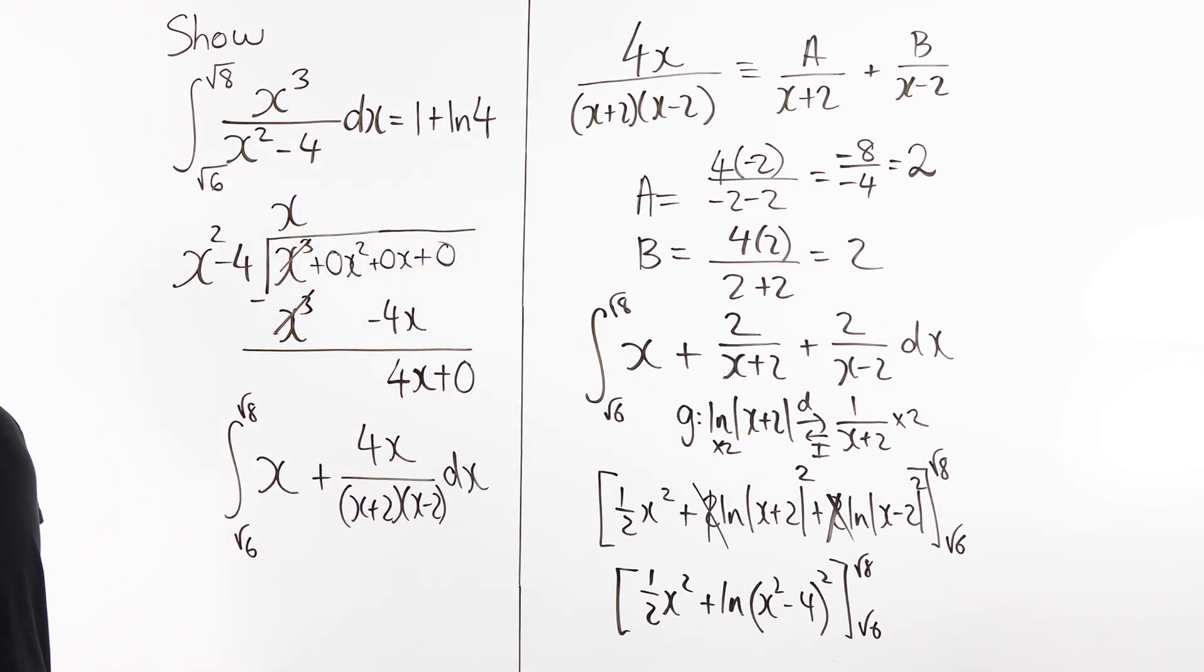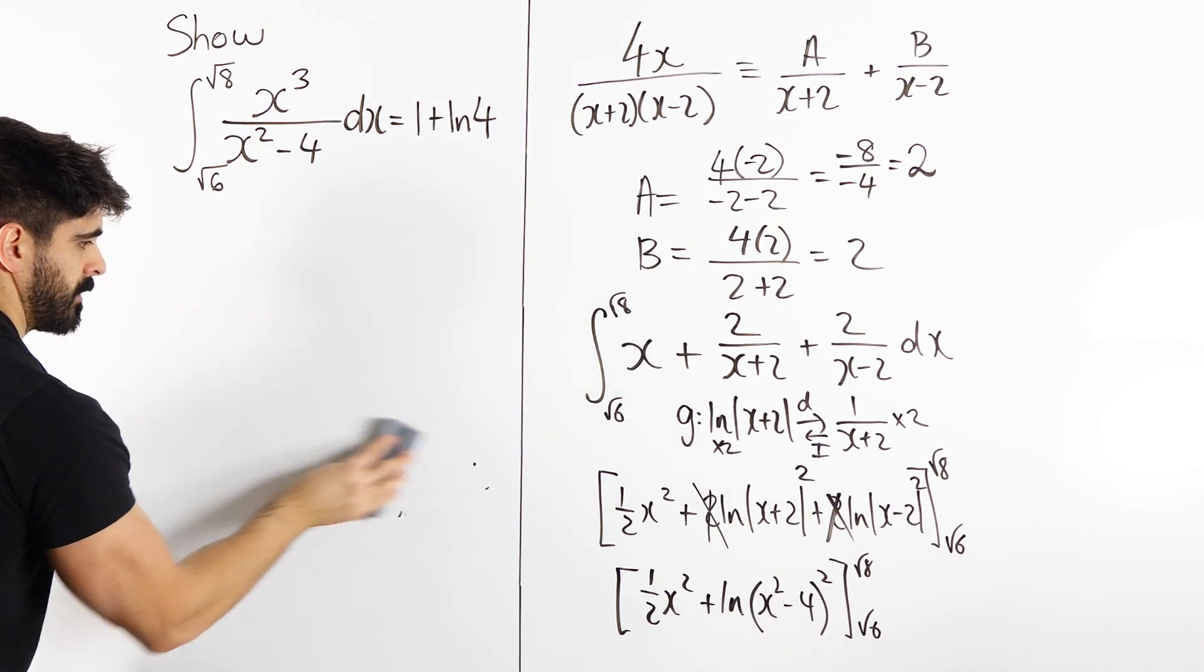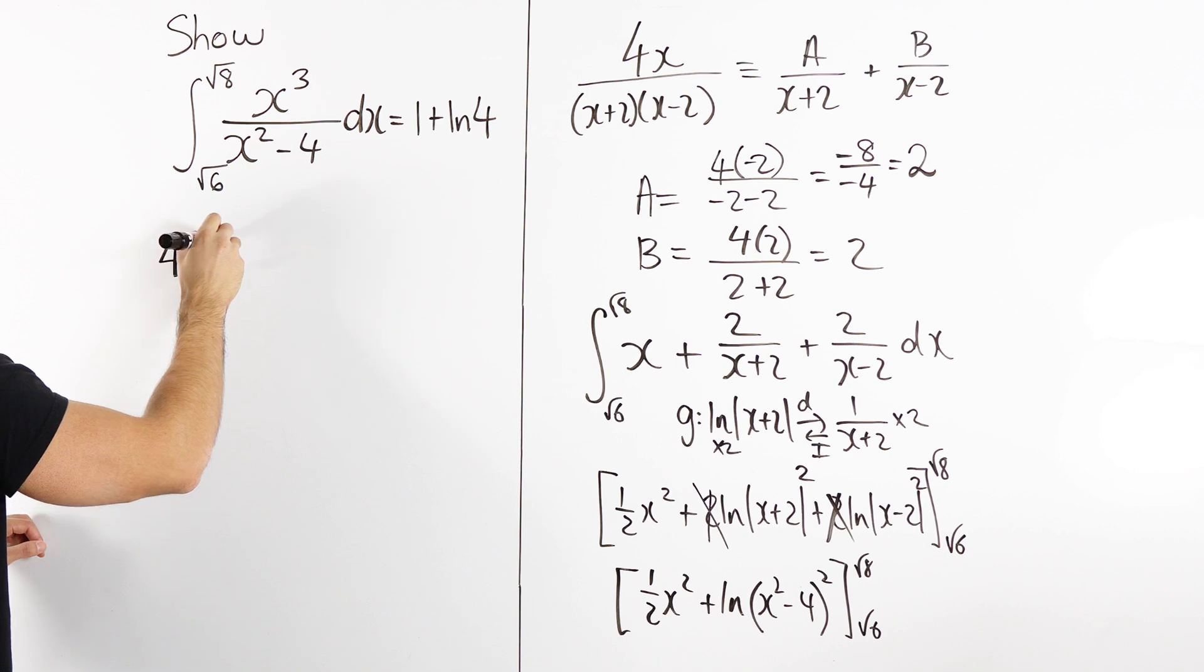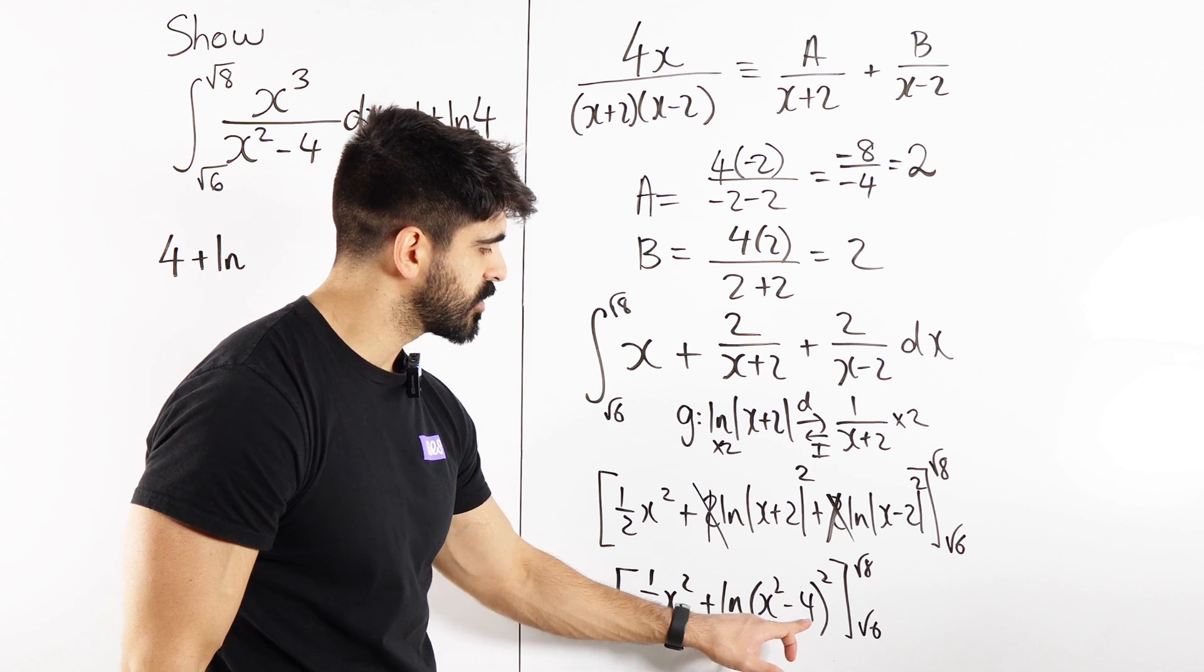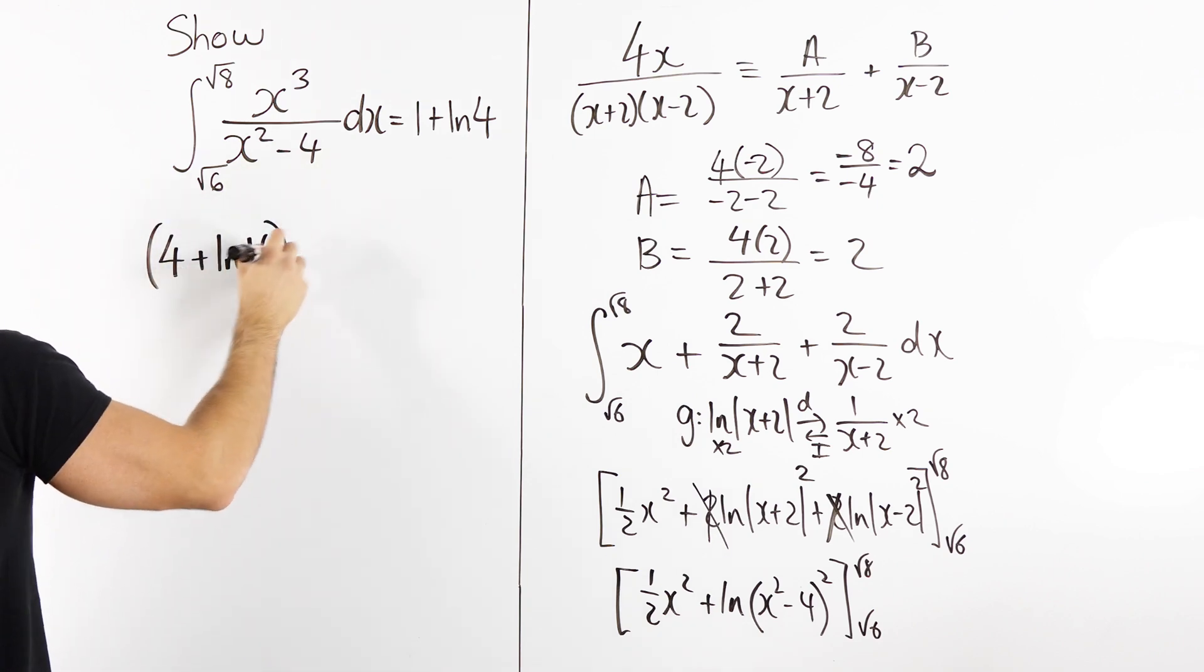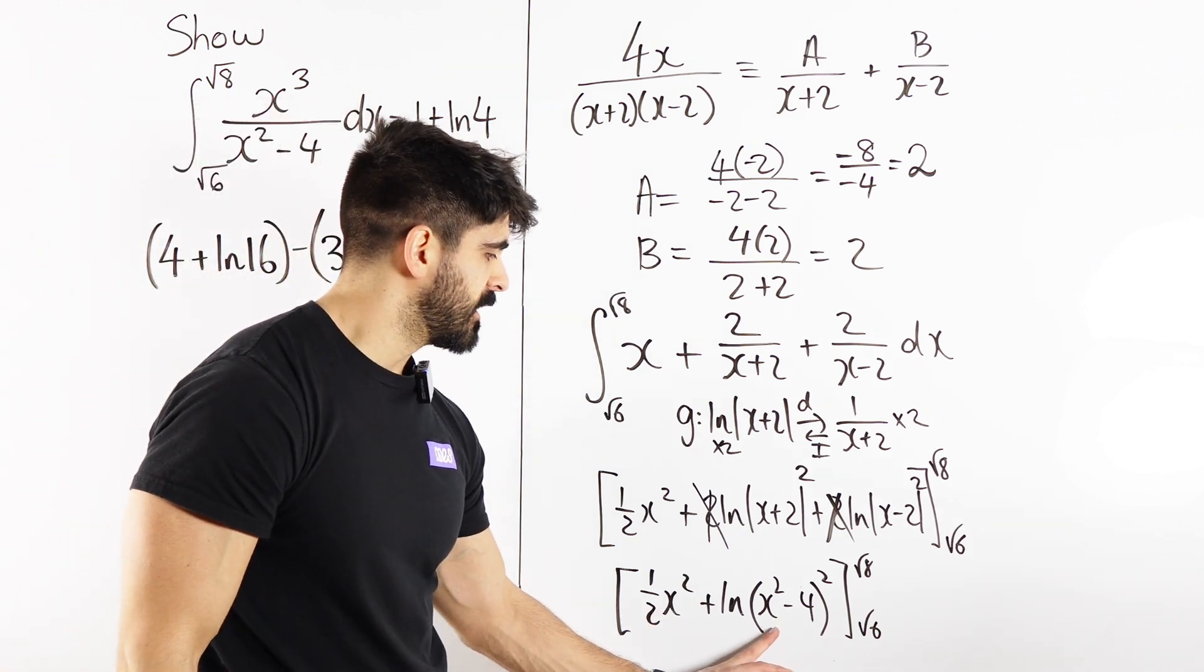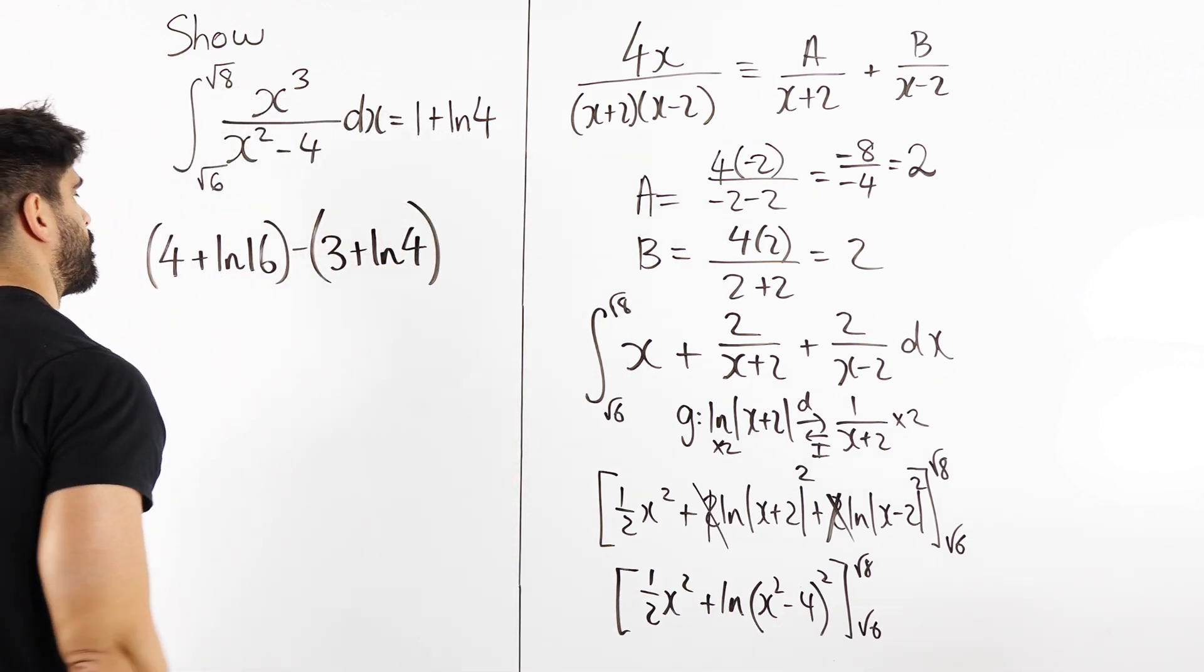Now we need to make our substitutions. Subbing in root 8, root 8 squared is 8 over 2, 4. So we have 4 plus ln of root 8 squared is 8, minus 4, 4 squared, 16. Or minus, you need to show this step in the exam. Root 6 squared 6, half 3, plus ln. Don't be overly dependent on your calculator. Root 6 squared 6, 6 minus 4 is 2, squared 4.